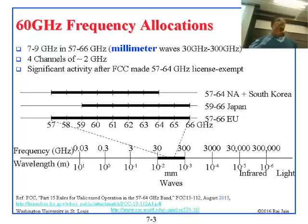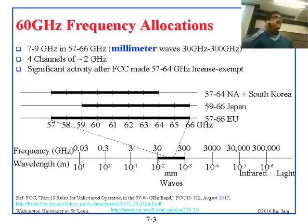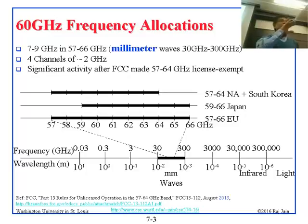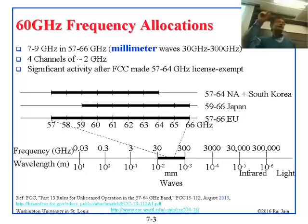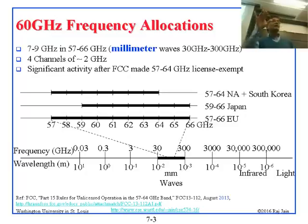Previously each channel was 20 megahertz — actually the channel numbering was 5 megahertz, and then you combined 4 of them to make 20. Now they're combining 4 of them to make 80, and 8 of them to make 160. Similarly, here we start with 2 gigahertz channels.